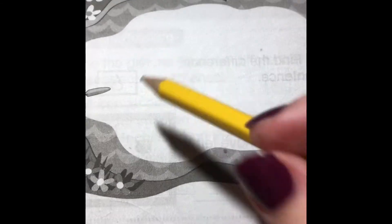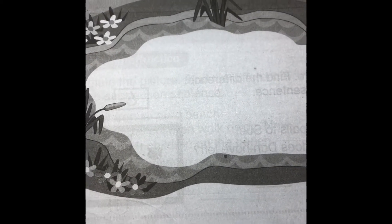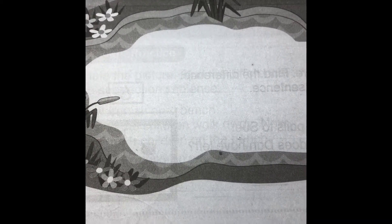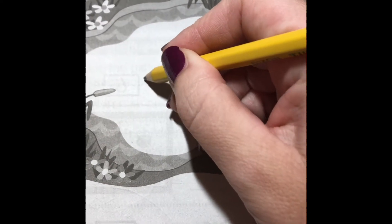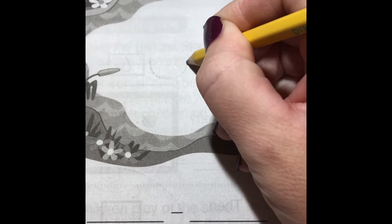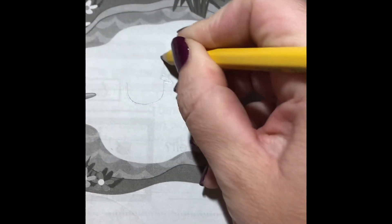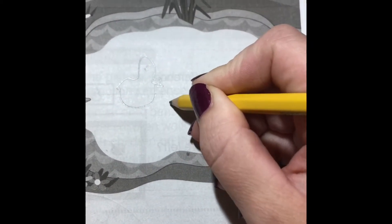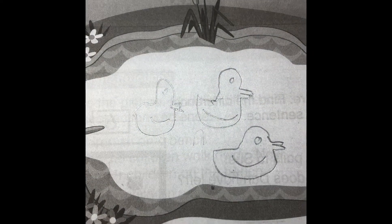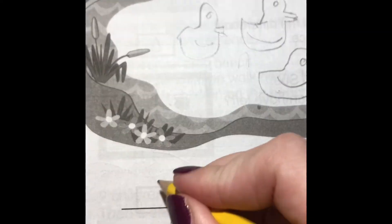Today we're talking about stories. Normally I would have you guys draw counters to represent the objects, but I think it'll be fun to draw some ducks in this pond. So let me go ahead and draw some ducks really quick. I decided to draw three ducks — that's the whole number, that's how many I'm going to start with.